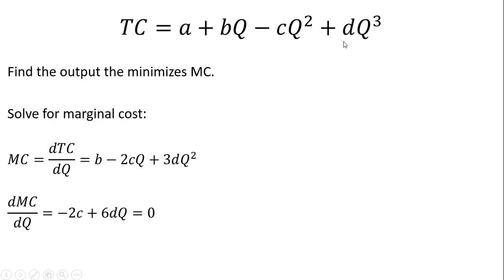Finally, the derivative of the last term: bring down the three in front, then subtract one from the exponent, leaving 3DQ squared. So that is marginal cost.